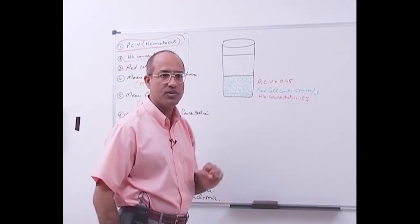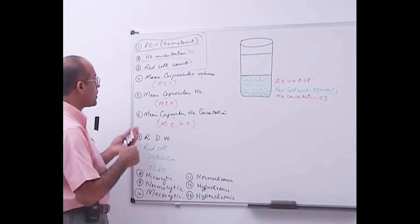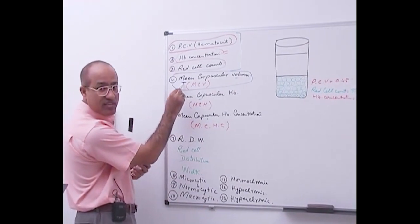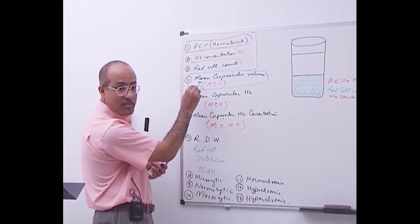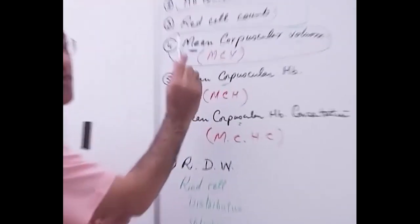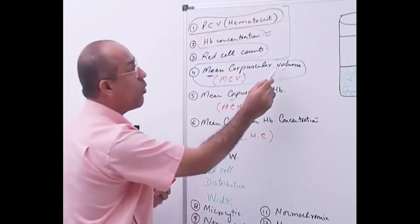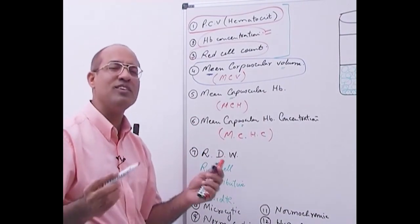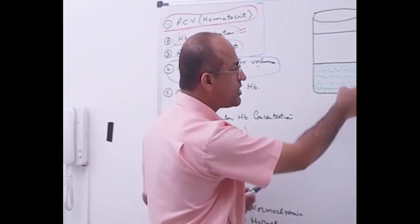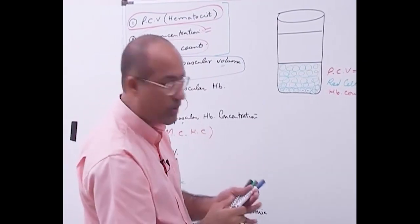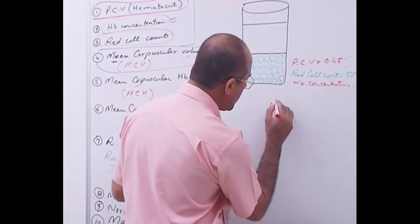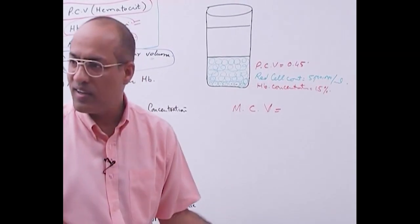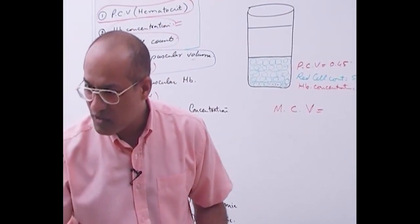These are our basic values. Now we want to develop the concept of mean corpuscular volume. This 'mean' is not the colloquial sense - it means average. It is the average volume occupied by one red blood cell. It is easy to determine: if you have these three basic values, you can derive this value.